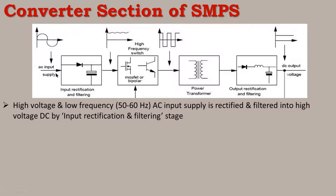The main supply is high-voltage, low-frequency AC. For example, we have 230 volts and 50 Hz AC input. This high-voltage, low-frequency AC is converted through the first input rectification and filtering circuit to produce a high-voltage DC output.